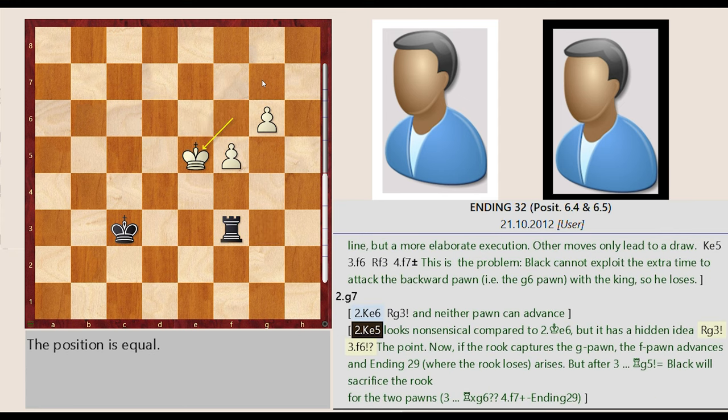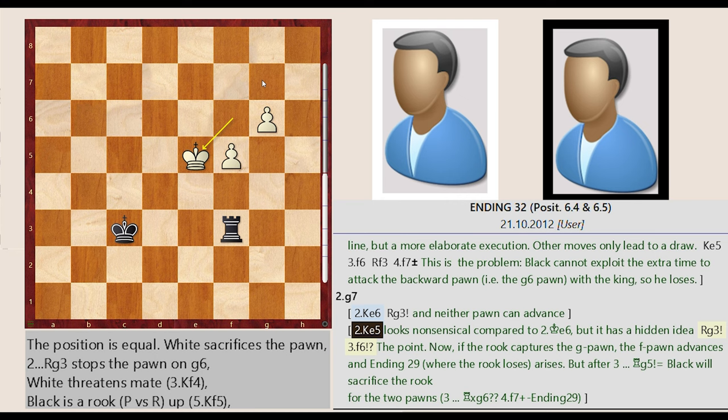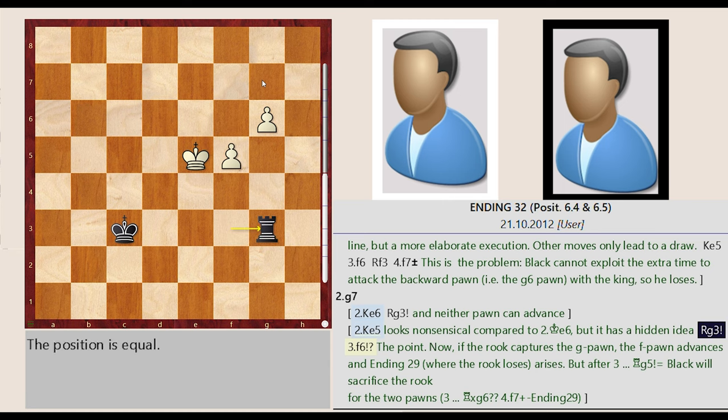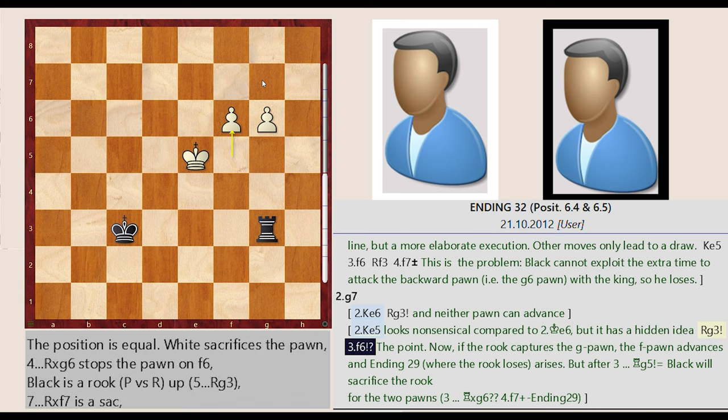King f6 e5 looks nonsensical compared to King e6, but it has a hidden idea. Rook f3 g3, F5 f6. The point. Now, if the rook captures the g-pawn, the f-pawn advances and ending 29, where the rook loses, arises.